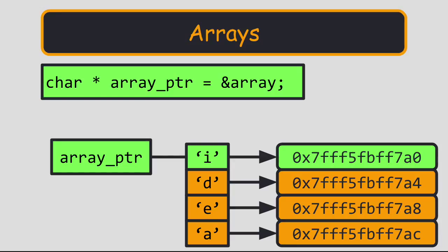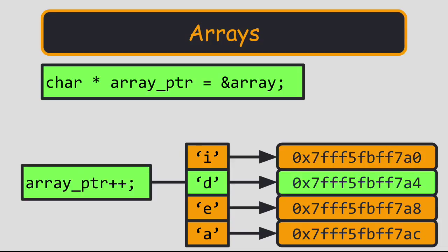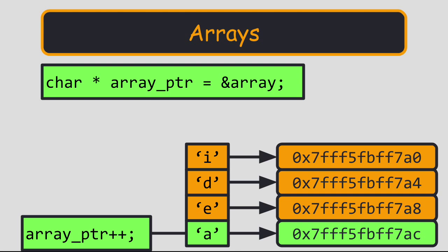We can traverse an array by using a pointer. Suppose we assign a char pointer, p, to hold the address of a char array. We can traverse through the array by incrementing the pointer.